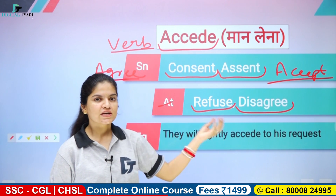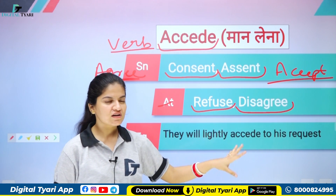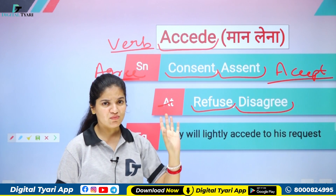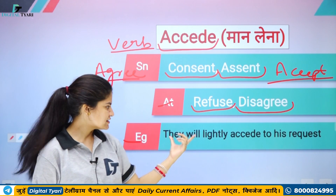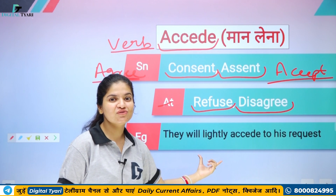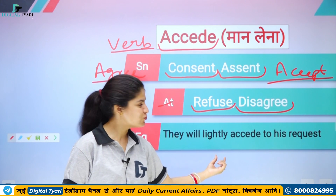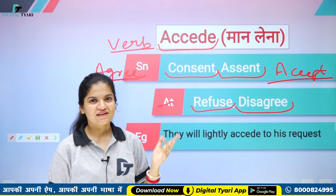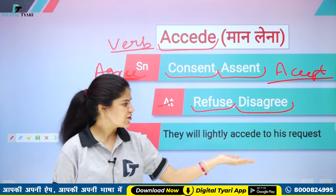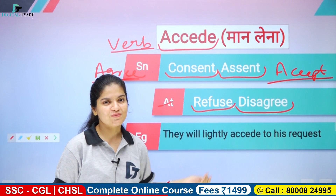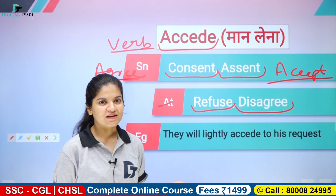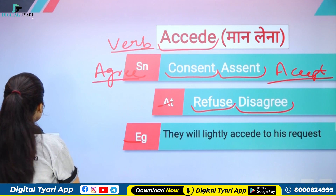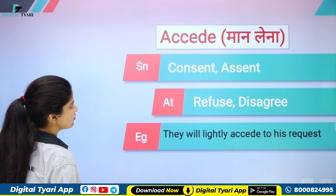Example: Woh jo us person ki request hai, us par mushkil hi, yani lightly matlab bahut hi kum, karengi — mujhe toh nahi lagta manengi. Iska matlab hai negative word hai jo lightly use karke — kya accede nahi karengi, kya mushkil hi karengi, mujhe toh nahi lagta ki uski baat manengi. Yeh is sentence ka matlab hai — accede karna yaani maana, maana. Chaliye toh accede ka matlab kiya hai — maan lena, aur ye ek verb hai.